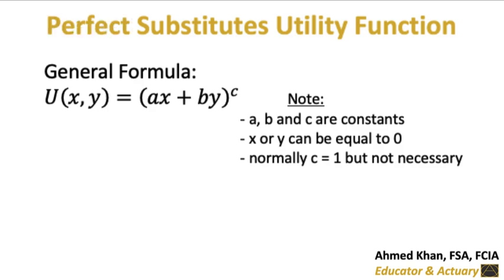For example, the consumer may consume only good x and not good y. Finally, c is typically equal to 1, but that's not necessary. The example that we will be working with is utility is equal to 2x plus 3y.